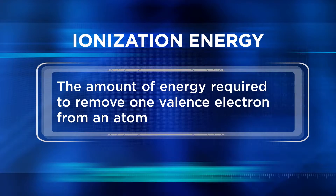Ionization energy is the energy needed to remove a valence electron from an atom, which often happens in chemical reactions. Ionization energy is an important characteristic of atoms because it helps explain why some atoms lose just one electron when bonding, why some lose two, or even why some atoms don't lose electrons at all.